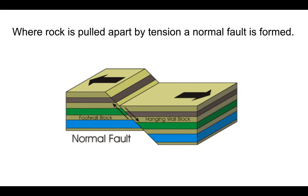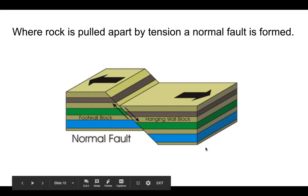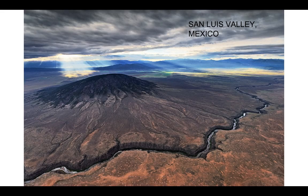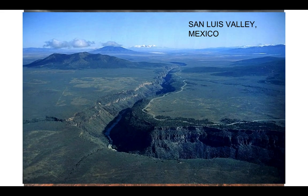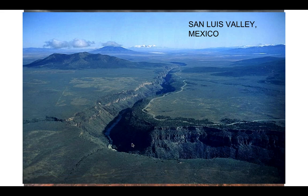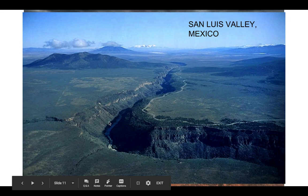There are three types of faults. A normal fault occurs where rock is pulled apart by tension. In a normal fault, the hanging wall — which is the block above the break — slides downward. An example of a normal fault is San Luis Valley in Mexico, where the rock was pulled apart and created the valley, which later filled in with the Rio Grande River.